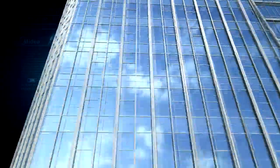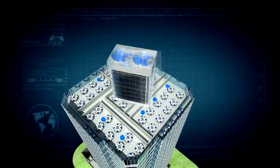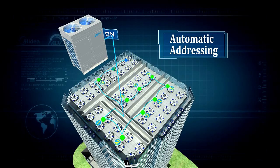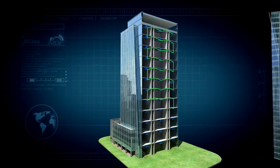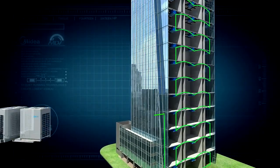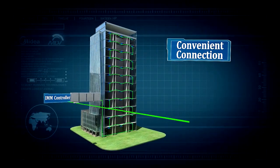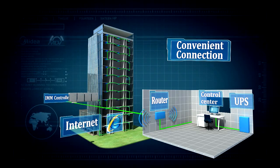The outdoor unit automatically identifies and distributes the address to each connected indoor unit, offering more convenience for installer. The flexible wiring enables directly connect the centralized controller to the outdoor units. Only one group of communication cable among indoor, outdoor units and group controller.